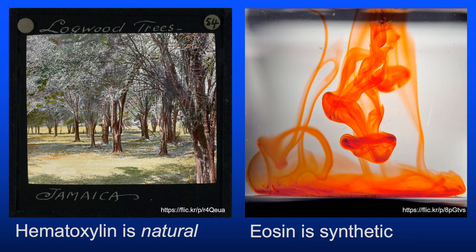Eosin is synthetic, whereas hematoxylin is a naturally occurring substance. It's derived from the heartwood—the dead but desirable central portion—of the logwood tree, Haematoxylum campechianum.